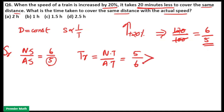The difference between 5 parts and 6 parts is equal to 1 part. The ratio time difference is equal to 1 part, but the actual time difference given in the question is 20 minutes, because when speed is increased by 20%, it takes 20 minutes less to cover the same distance. That means the actual time difference is 20 minutes, so 1 part is equal to 20 minutes.